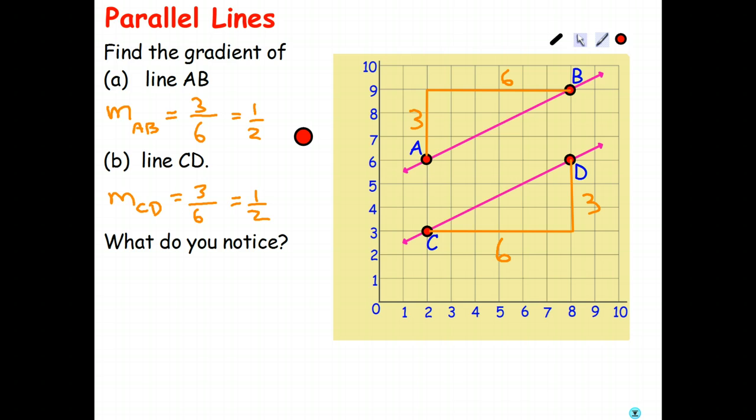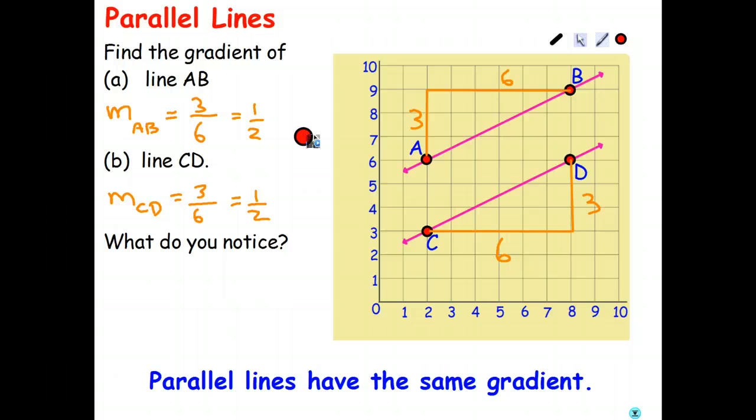So as you may suspect by now, the point of all of this is if two lines are parallel, what do we know about their gradients? Because they have to be the same. So parallel lines have the same gradient.